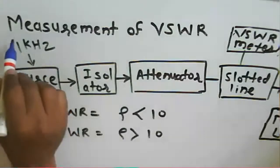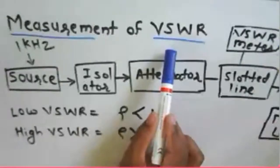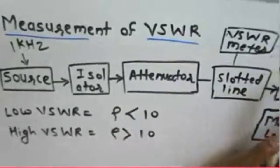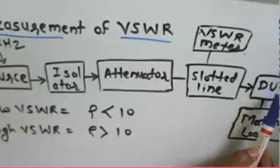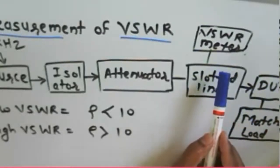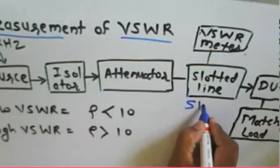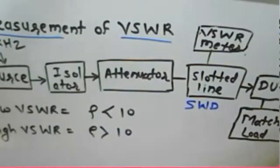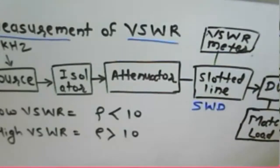Welcome to the microwave communication course. Today we will see the measurement of VSWR — how to measure the VSWR. VSWR is nothing but the Voltage Standing Wave Ratio. Standing waves occur when a device is mismatched, causing reflections. The reflected signal and the forward signal are superimposed on each other, creating a standing wave. A slotted line section, or standing wave detector, is used to measure the standing wave that occurs across the device.